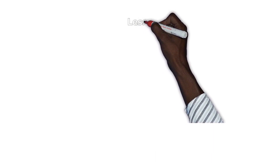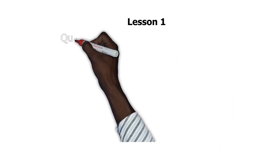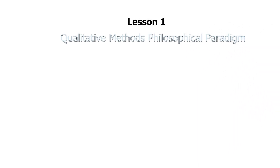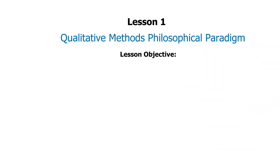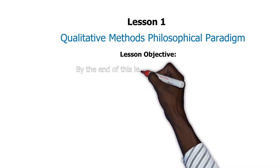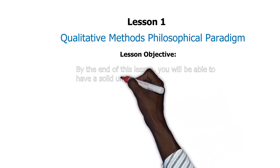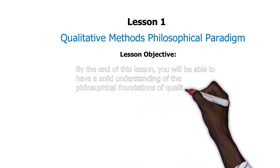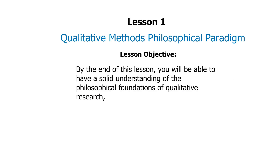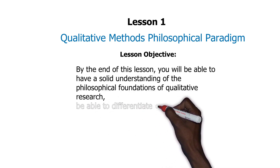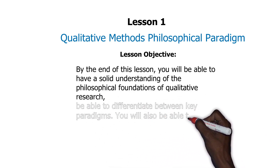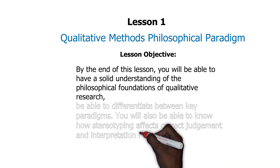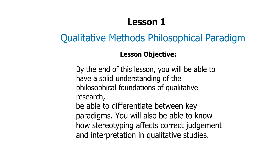Lesson one is qualitative method philosophical paradigm. The lesson objective: by the end of this lesson, you will be able to have a solid understanding of the philosophical foundation of qualitative research. You'll be able to differentiate between key paradigms, and you will also be able to know how stereotyping affects correct judgment and interpretation in qualitative.